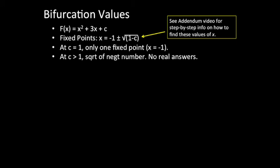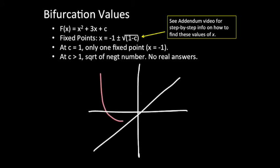At c greater than 1, what we see is a negative number underneath the square root. And that means that there's no real answers because the square root of a negative number is actually a non-real number. So what we would see here in this case is the same parabola, but translated up significantly enough that it is actually not touching the y equals x line at all, meaning that there are no fixed points in this case.